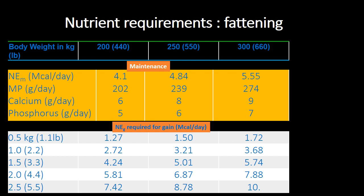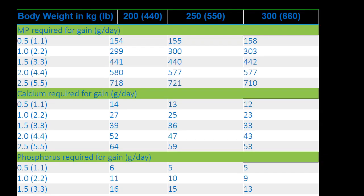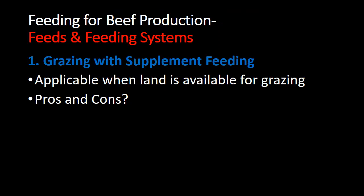Here are the nutrient requirements for fattening animals with body weights of 200, 250, and 300 kg. The table includes net energy for maintenance, metabolizable protein, calcium, and phosphorus requirements for maintenance, as well as net energy requirement for body weight gain per 0.5 kg gain. The energy requirements are mentioned, along with metabolizable protein, calcium, and phosphorus requirements per 0.5 kg body weight gain. The ration can be formulated the same way as for dairy animals using these values.